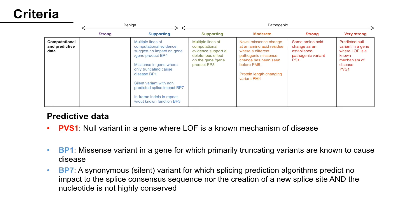Next, Predictive Data: PVS1 is for null variants in a gene where loss-of-function is a known mechanism of disease. BP1 is for missense variants in a gene for which primarily truncating variants are known to cause disease. BP7 is for a synonymous variant for which splicing prediction algorithms predict no impact to the splice consensus sequence, nor the creation of a new splice site, and the nucleotide is not highly conserved.